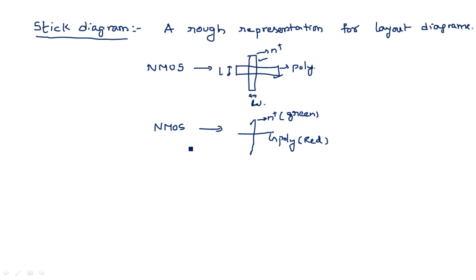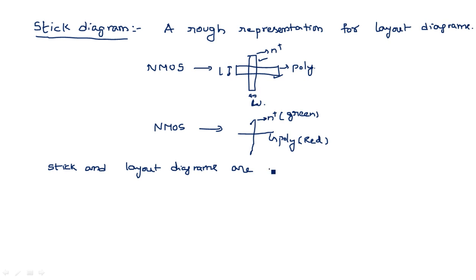Before going into the construction of circuit diagrams, let me tell you what the different layers are, how to use them, and what colors indicate. Stick diagrams and layout diagrams are represented in colors — it is a color encoding diagram. Now I will tell you what the different colors are for individual layers.